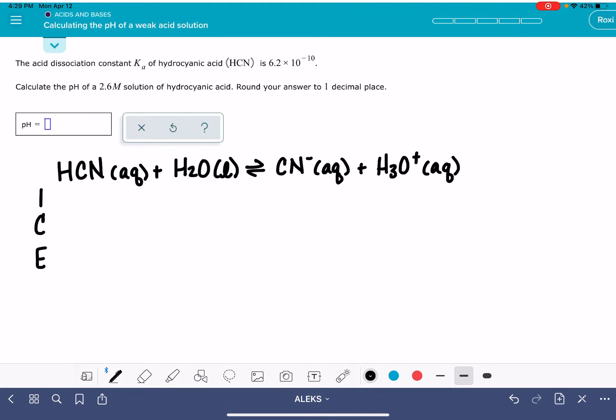In our ice table, we're going to start with the initial concentration of the acid. In this case, it is 2.6 molar. We don't have any product initially. We don't know how much of this acid is going to react, so we're going to use X to represent the extent of the reaction, minus X for our reactant and plus X for our products. At equilibrium, we're going to have 2.6 minus X for our reactant.